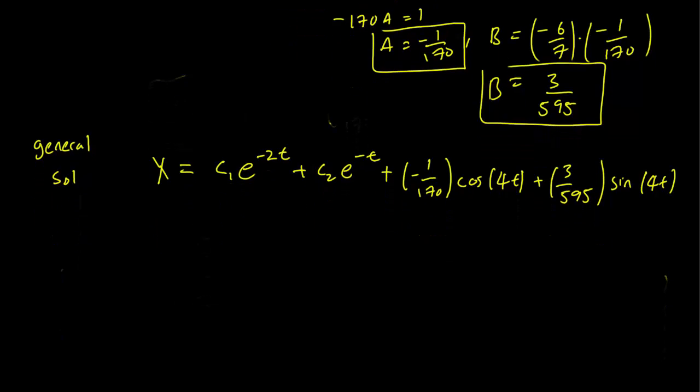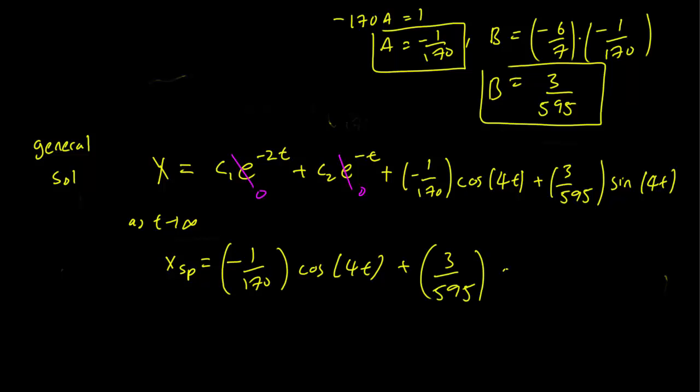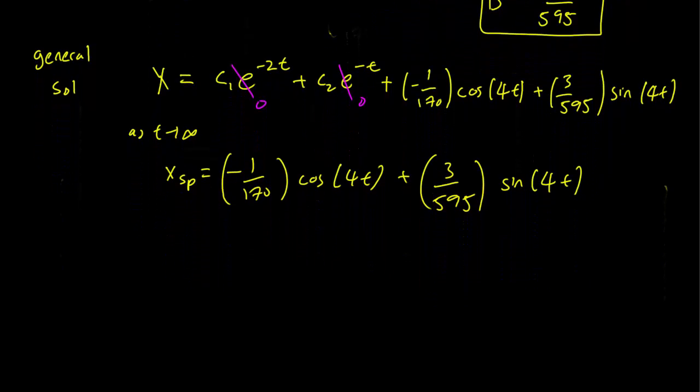And in this case, remember that as t goes to infinity, this goes to 0, this goes to 0. So right now, our steady periodic solution is just going to be (-1/170)*cos(4t) + (3/595)*sin(4t). We're going to calculate the transient solution in the next video since this one has already gone a little long. But we already have the general solution and the steady periodic solution here.